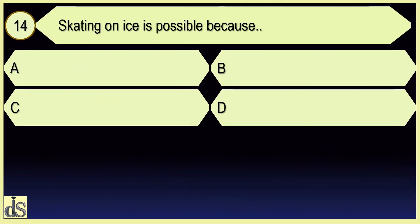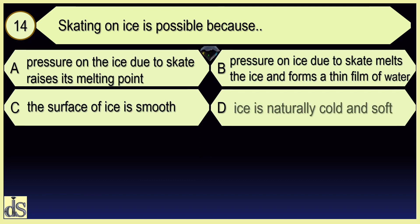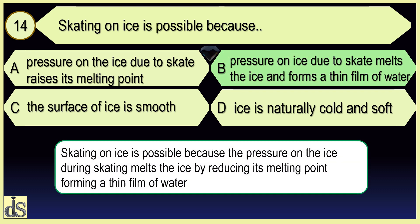Skating on ice is possible because pressure on ice due to skate melts the ice and forms a thin film of water.